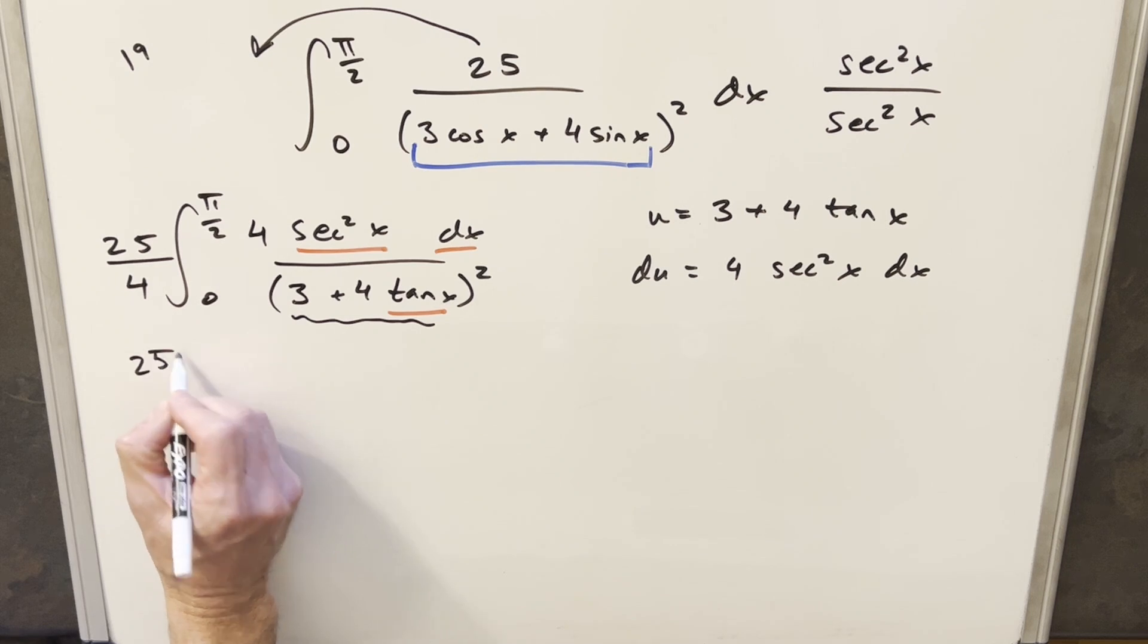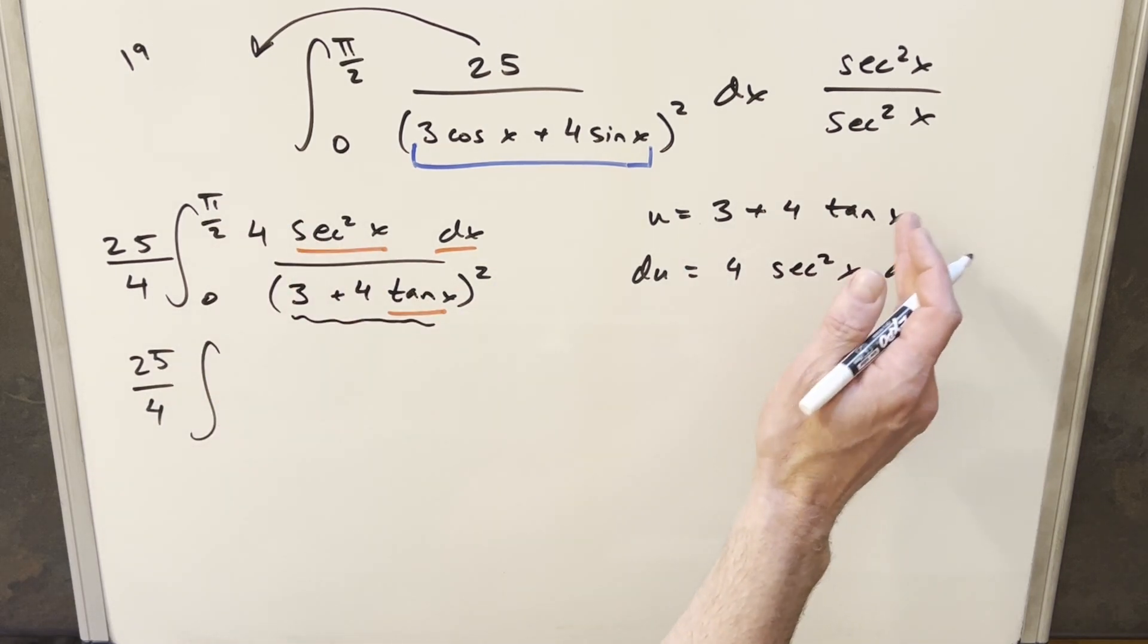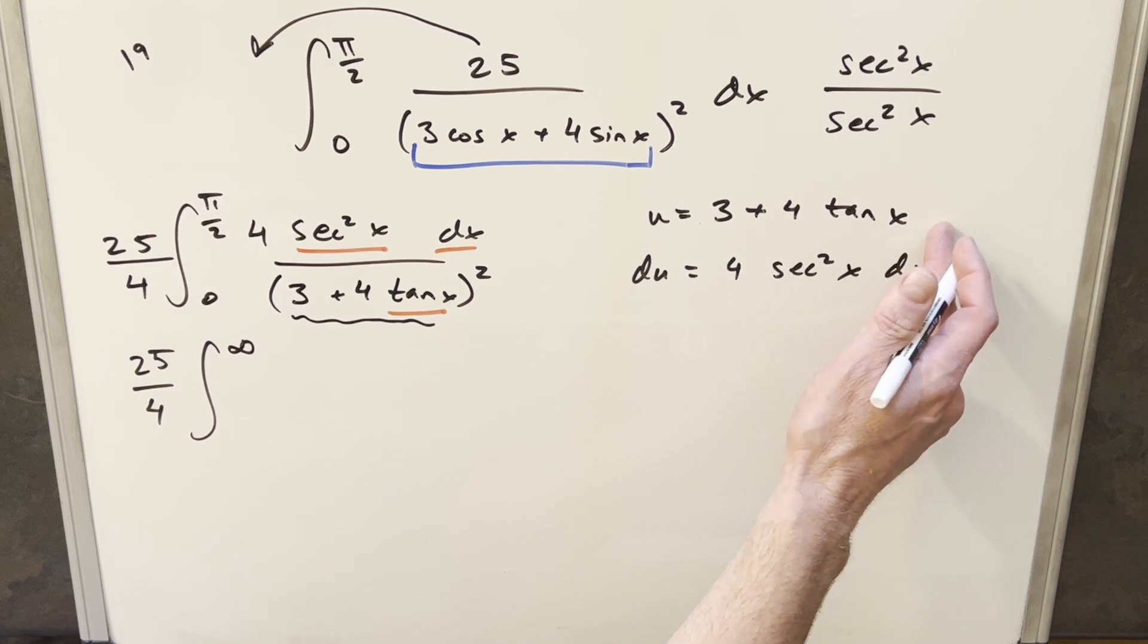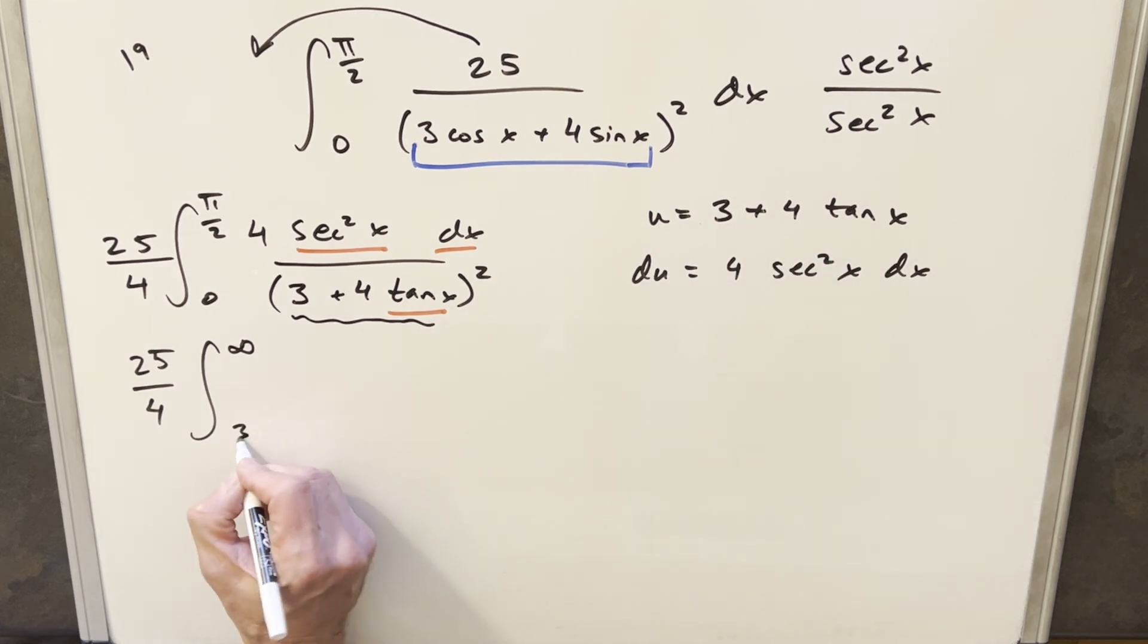Then I'll just go ahead with this. So first we need to update our bounds. When we put pi over 2 in the tangent, it's going off to infinity, so this whole upper bound is going to be just infinity. Then we plug 0 in here, tan of 0 is 0, but we still have this 3 here.